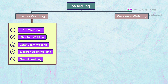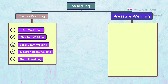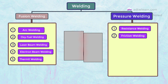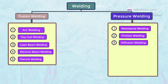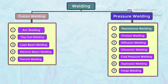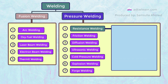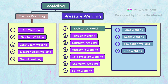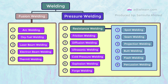Under pressure welding, the most common processes are: first, resistance welding, which is the most popular and is largely used in automobile industries; second, friction welding; third, diffusion welding; fourth, ultrasonic welding; fifth, cold pressure welding; sixth, explosion welding; and seventh, forge welding. Resistance welding is further categorized into: spot welding, seam welding, projection welding, butt welding, flash welding, and percussion welding.